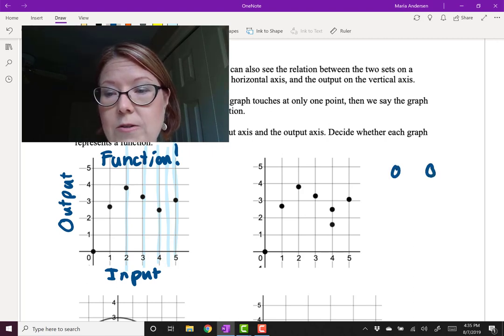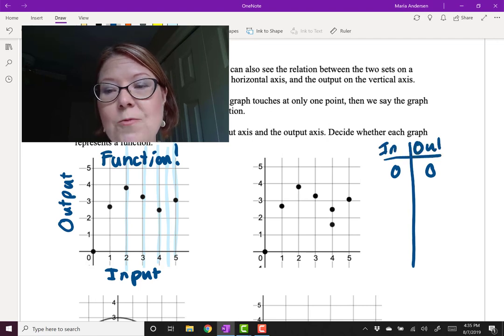That's the input and the output is 0. Let me just make a table of values for this one. So I have my input and my output. This is another way to look at a graph.